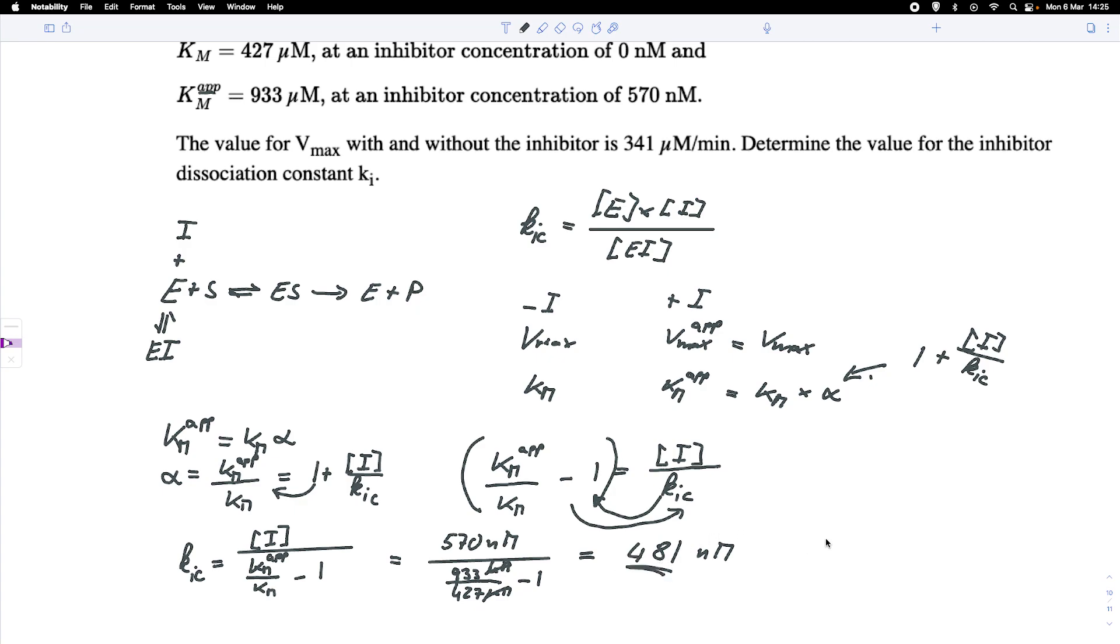And of course, if we so wish, we could also calculate the alpha. So the alpha here would be 1 plus 570 over 481, what we just calculated, and here this alpha would be a factor of roughly 2.2 if we so wish.